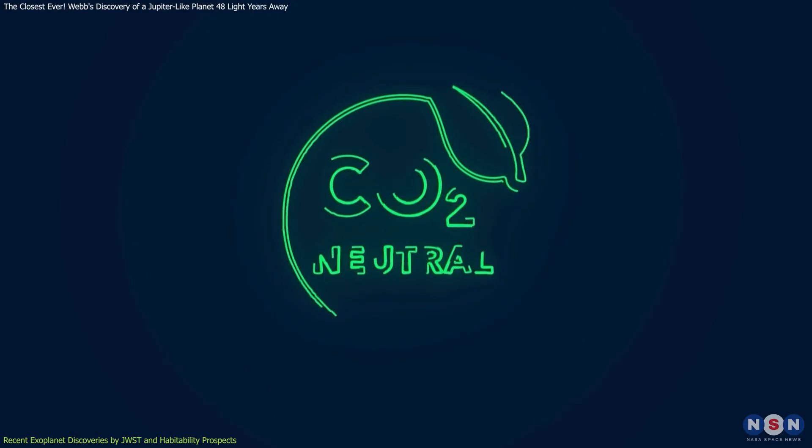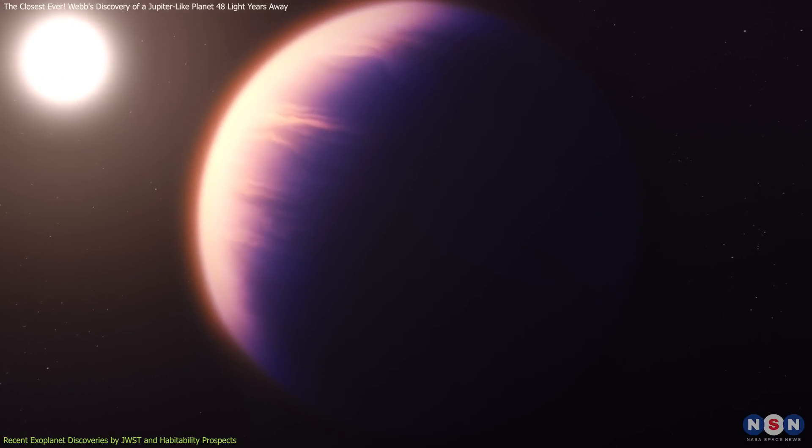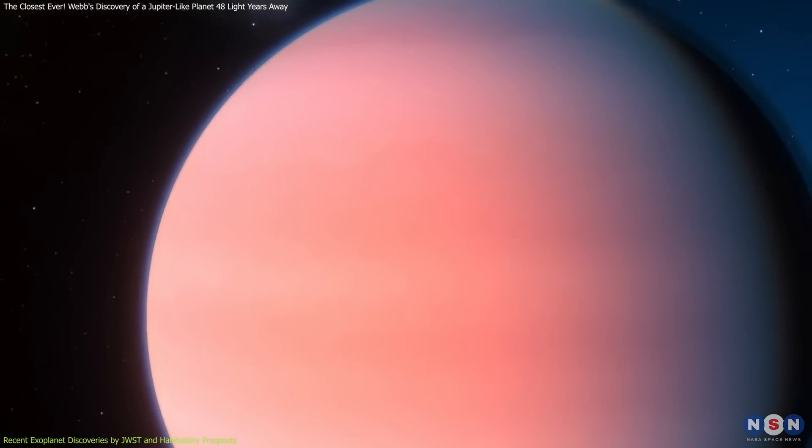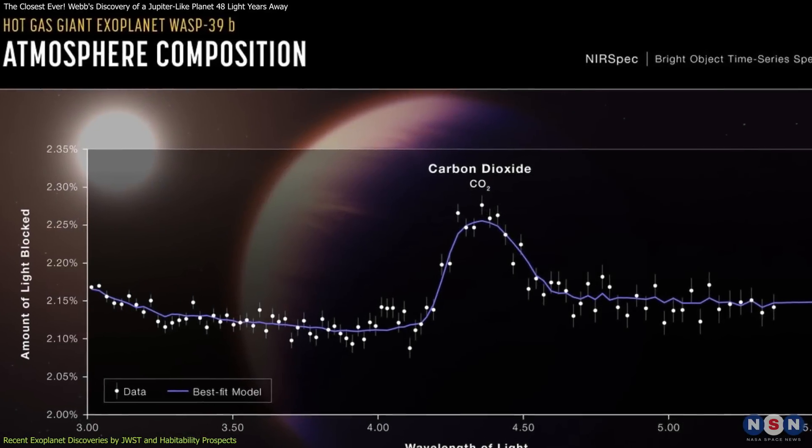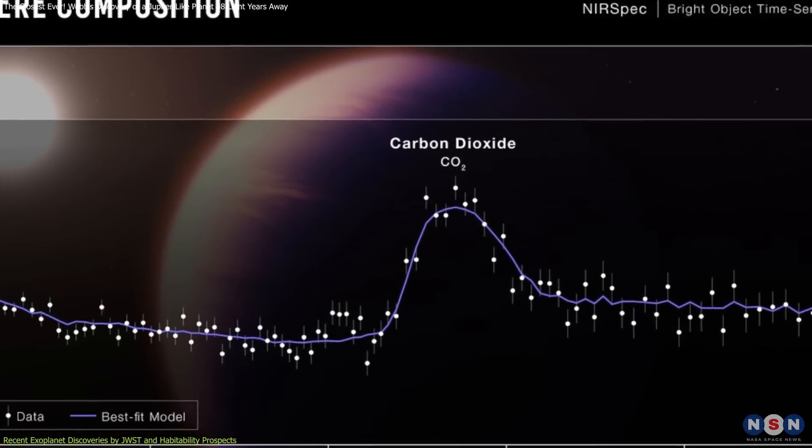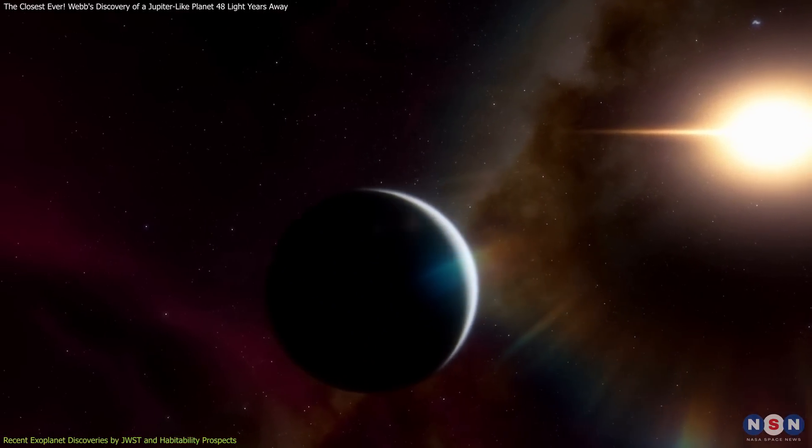which is important as carbon dioxide is a key greenhouse gas that can inform us about the thermal dynamics of an exoplanet's atmosphere and its potential for sustaining a stable environment over geological timescales. The presence of carbon dioxide can also indicate active geochemical or biological processes, which are significant markers when assessing the habitability of an exoplanet.